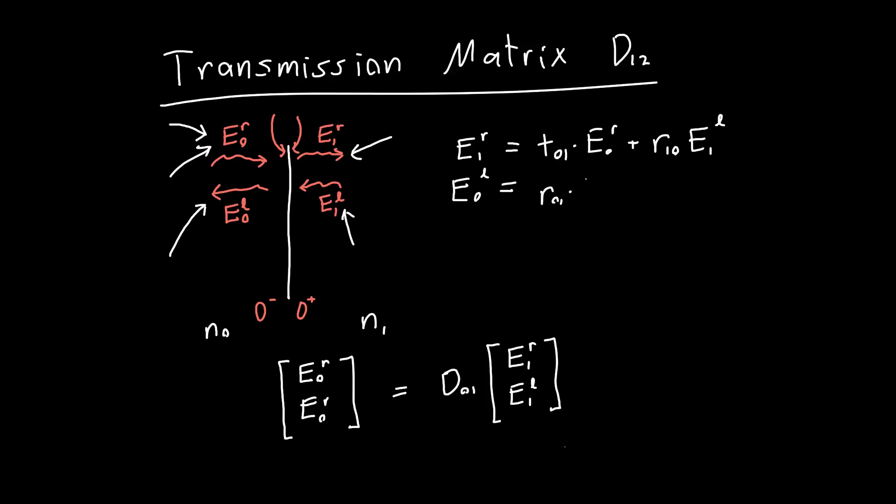So R01, well, that's not an R, R01 times E0 traveling to the right. And we also need to worry about the transmitted value. So the transmitted value, T10, times E1 traveling to the left. And that's great. This looks like we have the matrix relationship that we want.